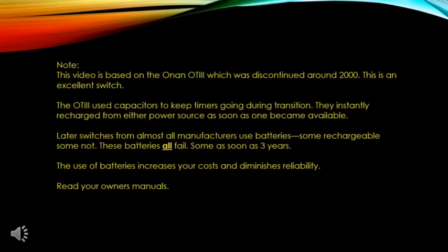This video is based on the Onan OT3 transfer switch, which was discontinued around 2000. It's an excellent switch — the OT3 used capacitors to keep the timers going during transition, instantly recharging from either power source as soon as one became available. Later switches from almost all manufacturers use batteries. Some are rechargeable, some are not. These batteries all fail — some as soon as three years. The use of batteries increases your cost and diminishes reliability. Read your owner's manual and service the batteries regularly.